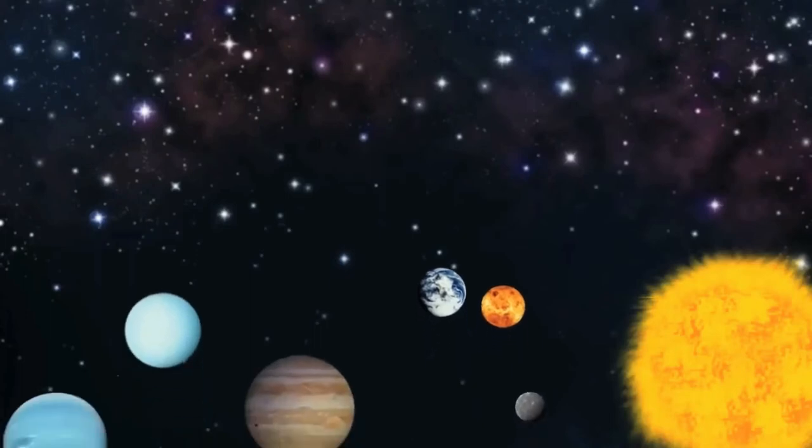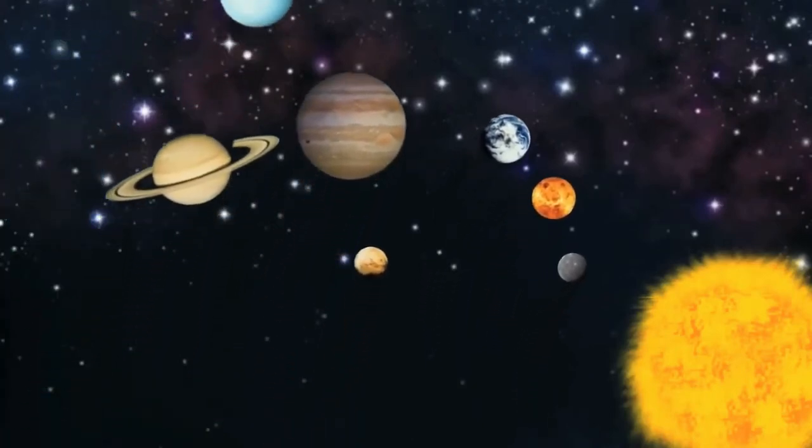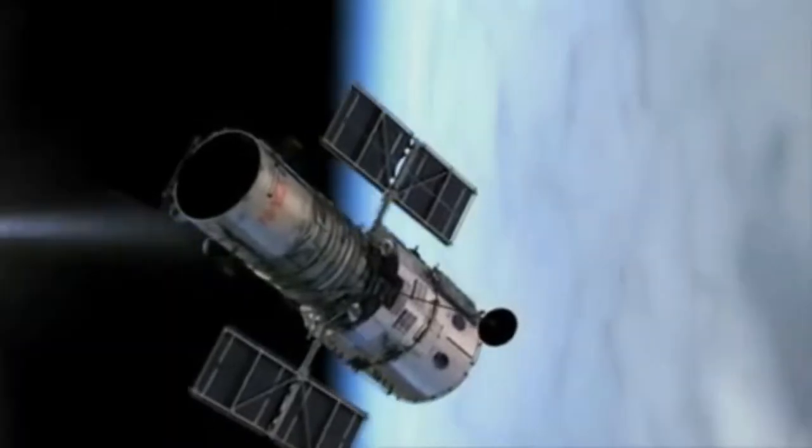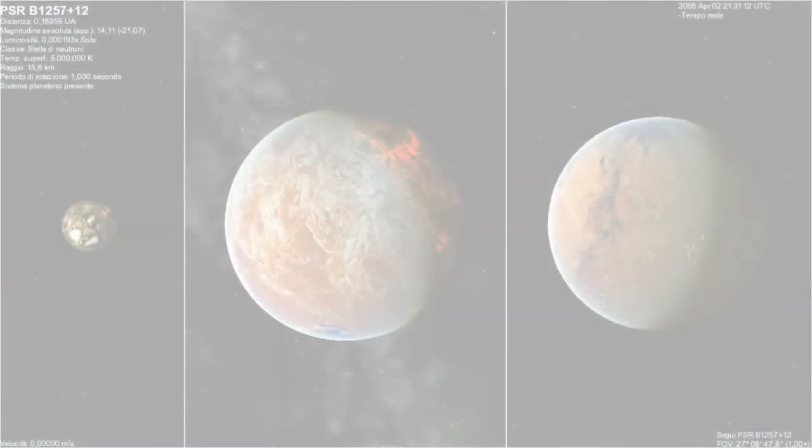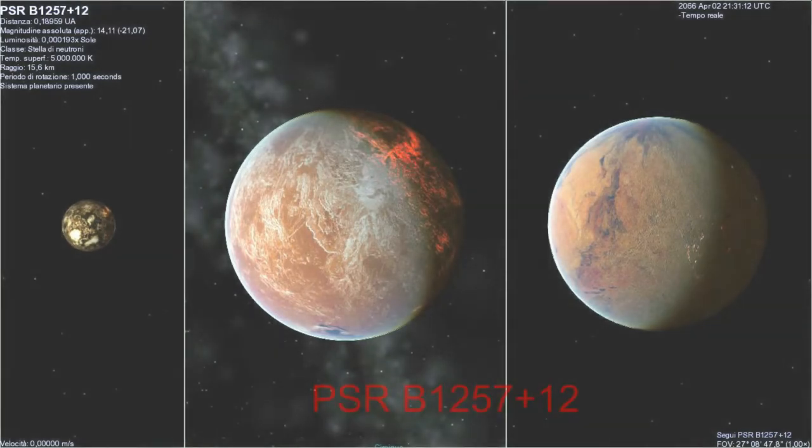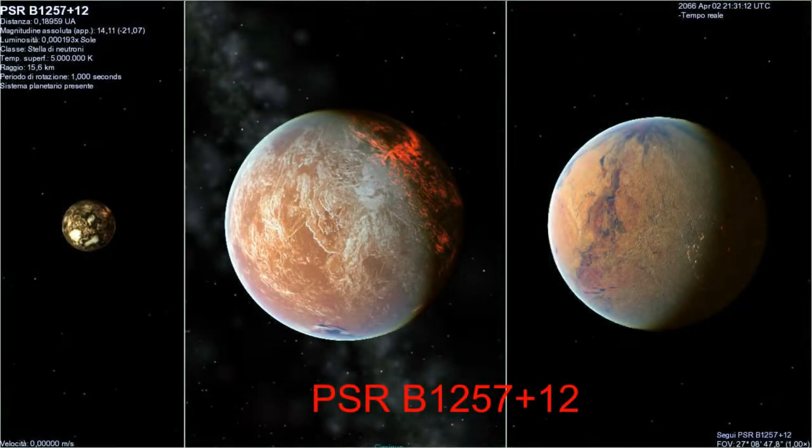But despite such simple calculations that give us a sense of the huge number of potential planets, the fact that other stars harbor planets was not observationally confirmed until 1992. It was the data of light source from the star PSR B1257-12 which gave us the first evidence of exoplanets.